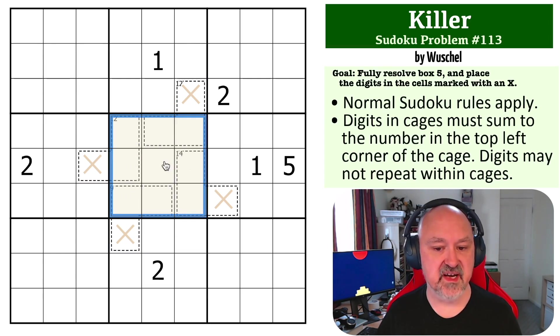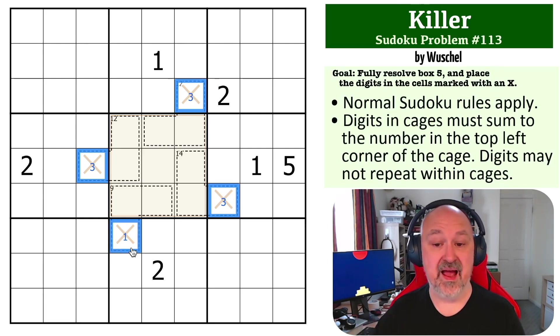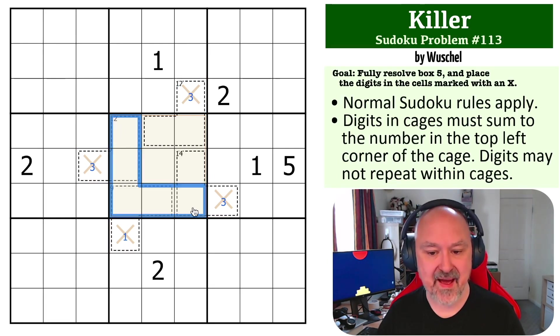We've got 47 in these cages already, and we know that the central box is going to contain the digits 1 to 9, so they will sum to 45. The minimum we can put in this cell because it sees 1 and 2 is a 3. The minimum we can put in this cell is a 3. The minimum we can put in this cell is a 3, and the minimum we can put in this cell is a 1. So we've already got 10 that we have to put into the cages. So the maximum that these can be is 37.